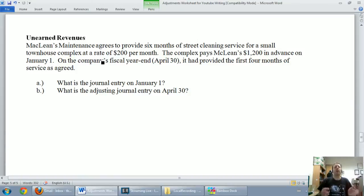So unearned revenues are kind of like the cousin of the prepaid expense, and they're like the cousin of the prepaid expense in one way particularly, they're not a revenue at all. A prepaid expense we said wasn't an expense, it was an asset. Well an unearned revenue isn't a revenue, it's a liability.